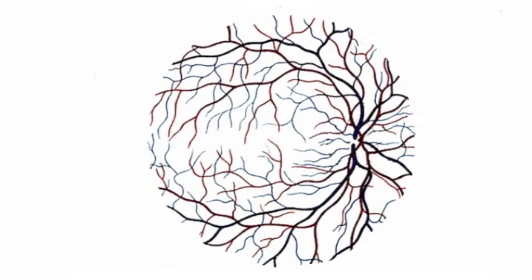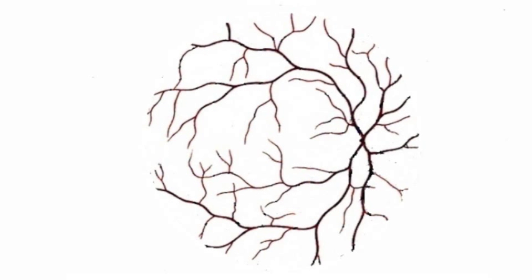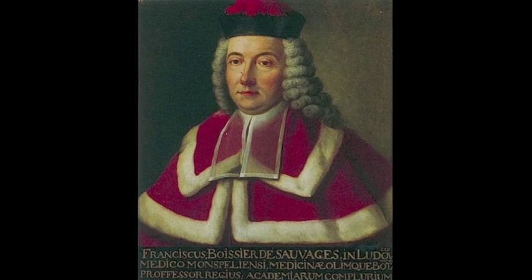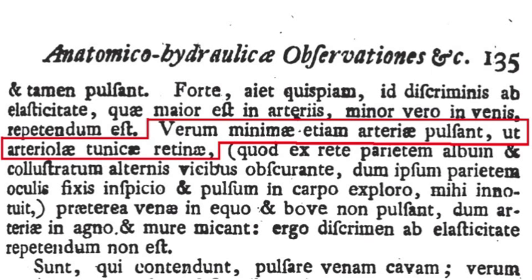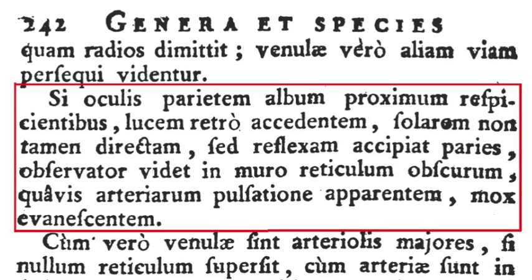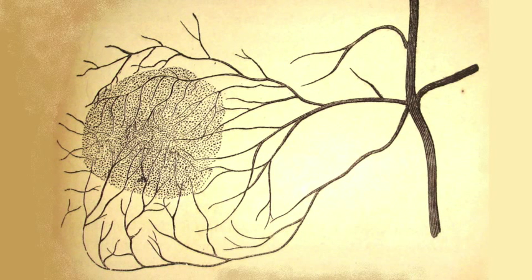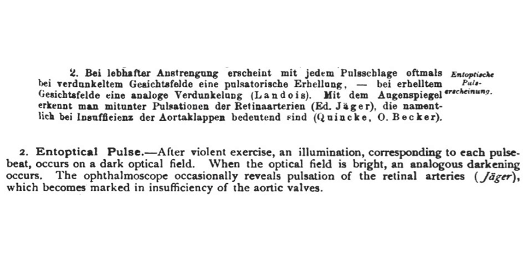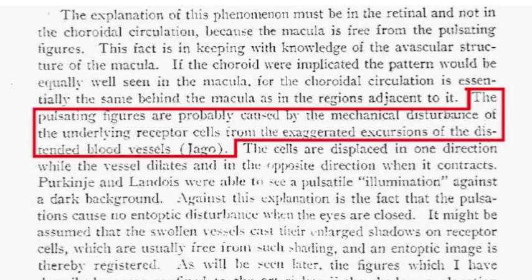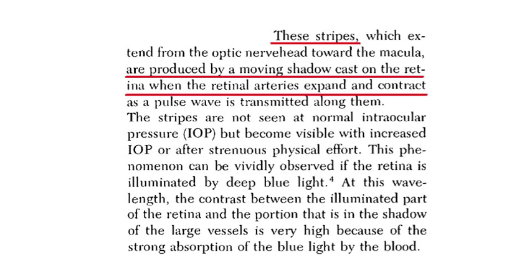In the pulsating vascular tree phenomenon, you see just the arteries pulsating. The French physician and botanist François Lacroix Bossier de Sauvages wrote about this in 1757 and again in a book in 1763. The English polymath Thomas Young wrote about this in 1793, and the English physician James Jago published a drawing in 1864. The German physiologist Leonard Landois called this an 'optische Pulsation,' meaning optical pulse appearance. The suggested explanation is that the arteries expand and contract with your pulse, which moves the retina, causing a sensation of light and changing the shape of the artery shadow, making it visible.